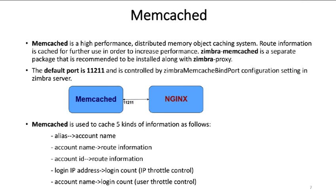The default port used by Memcached is 11211, controlled by the Zimbra Memcached bind port parameter. Memcached is used to cache five kinds of information: the alias-to-account mapping, account name to route information, account ID to route information, login IP address to login count (used for IP-based throttling), and account name to login count (used for user-level throttling of connections).